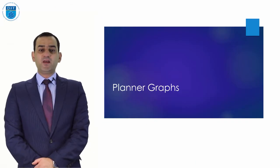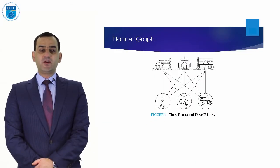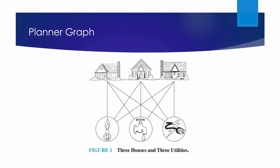Consider the problem of joining three houses to each of three separate utilities, as shown in Figure 1. Is it possible to join these houses and utilities so that none of the connections cross? This problem can be modeled using the complete bipartite graph K3,3. The original question can be rephrased as: can K3,3 be drawn in the plane so that no two of its edges cross?